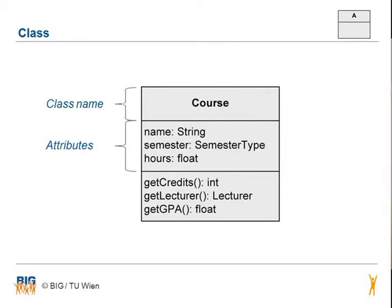Each attribute has a type. In our case, the attribute name has the predefined type string. Semester type is a self-defined type of the attribute semester, and float is the type of the attribute hours.